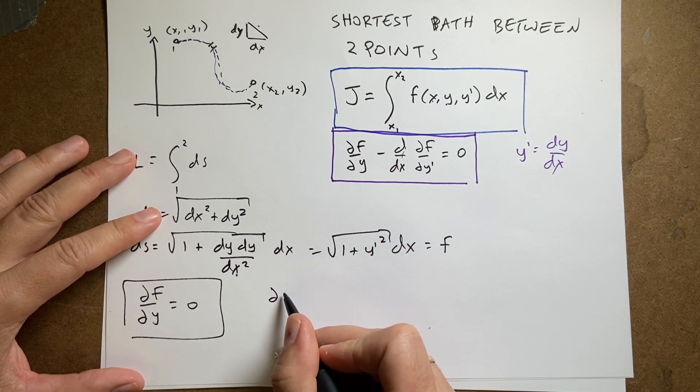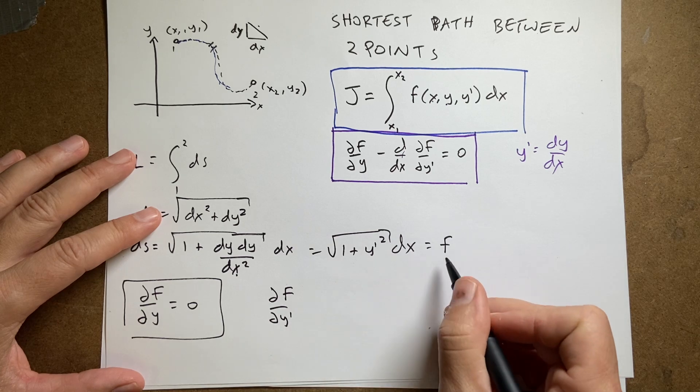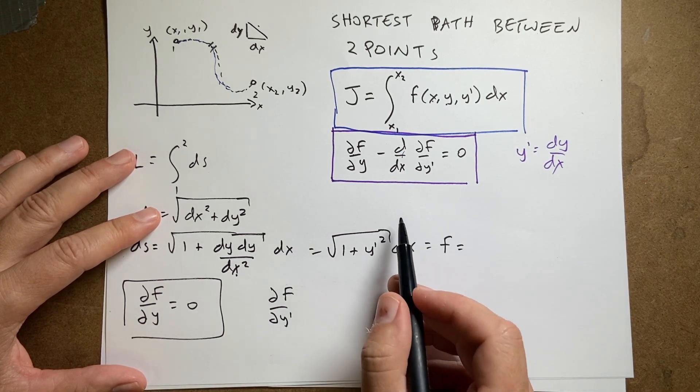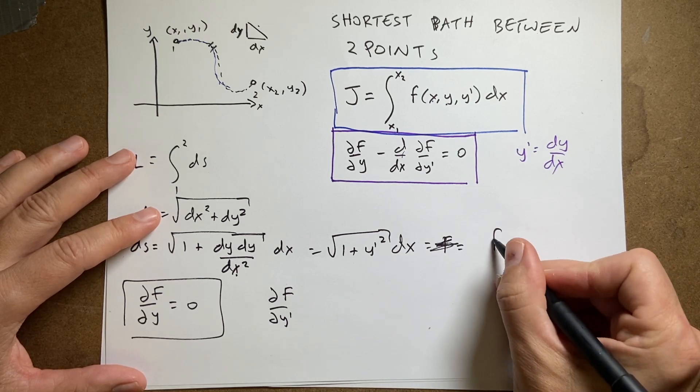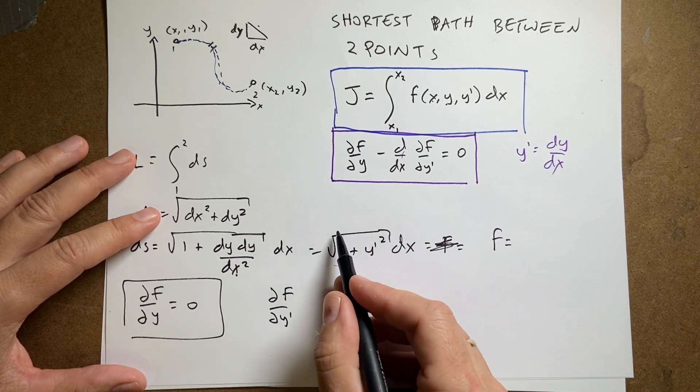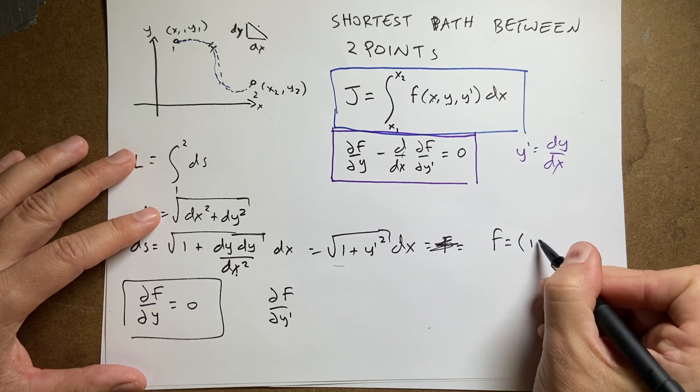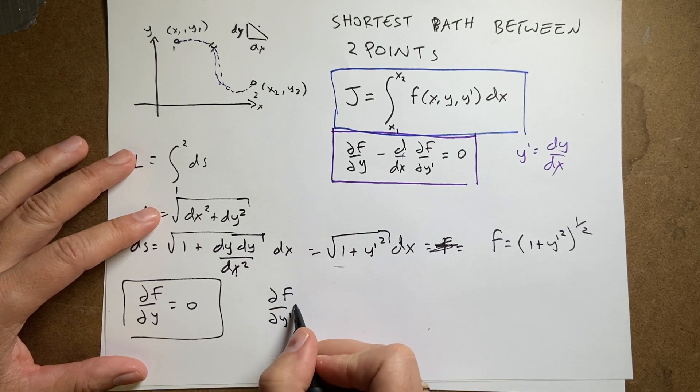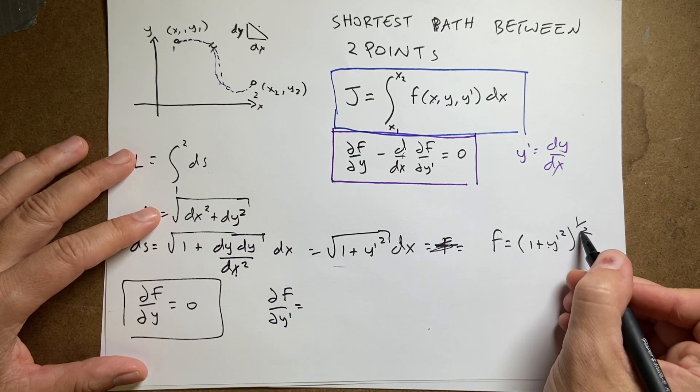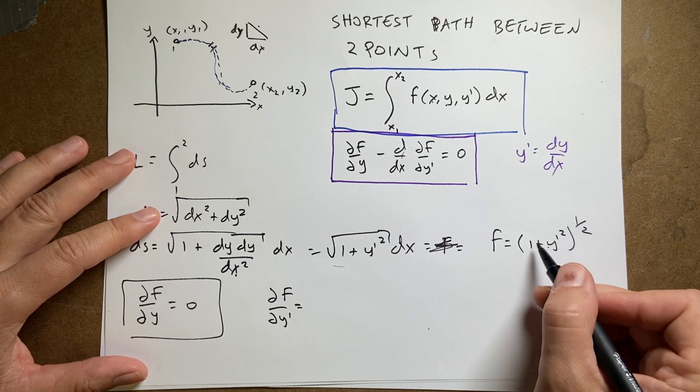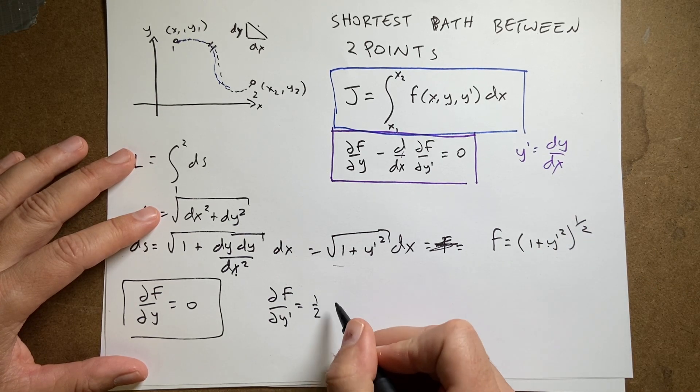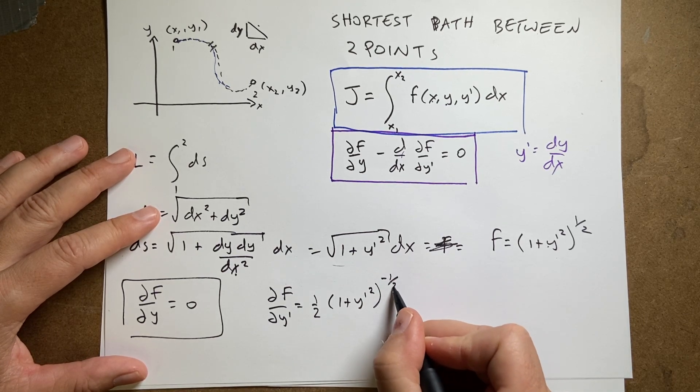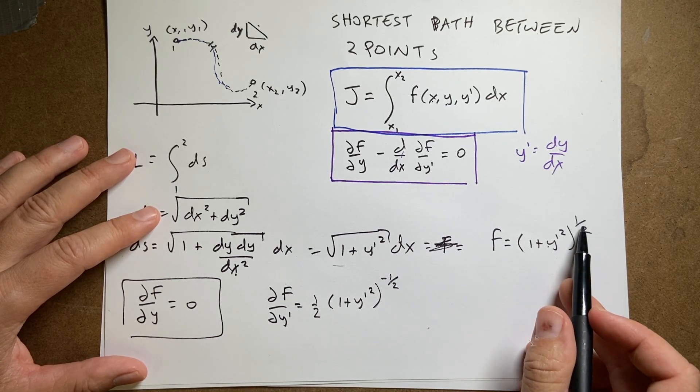Now, I can take the partial of f with respect to y prime. So, I'm going to write this as, actually, this is not f. f is just the square root part. So, I'm going to write it as 1 plus y prime squared to the 1 half, because I like to think of things that way. So, if I take the partial of that with respect to y prime, I can use the chain rule. It's going to be the derivative of this, which is 1 half times 1 plus y prime squared to the negative 1 half.